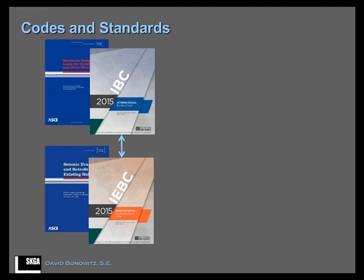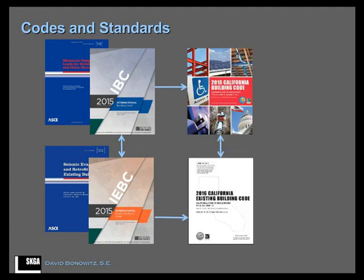Keep in mind that these are the model codes — they are not the building code in your jurisdiction. The building code in your jurisdiction is the adopted version of these model codes. In California, for example, we now have the 2016 California Building Code and California Existing Building Code. They adopt by reference the model codes, and in some jurisdictions there are further amendments — not just to the model code but to the state code. Many California cities, such as San Francisco, make amendments on top of the state code, which itself amended the model code.